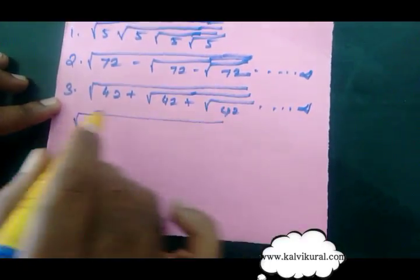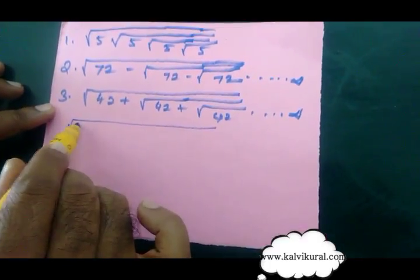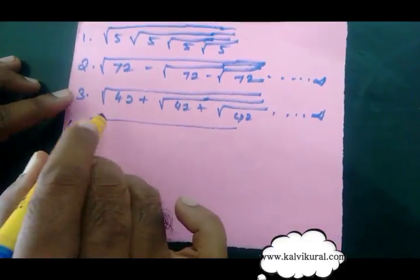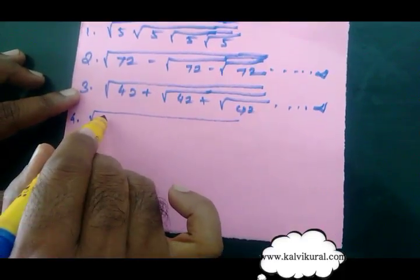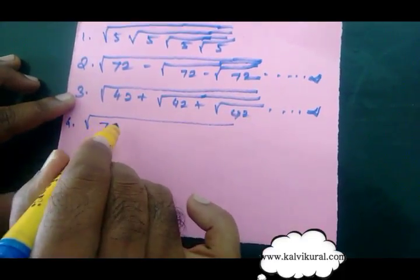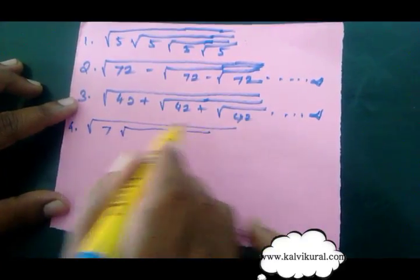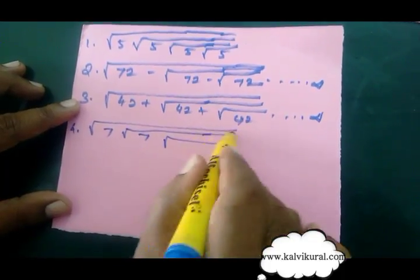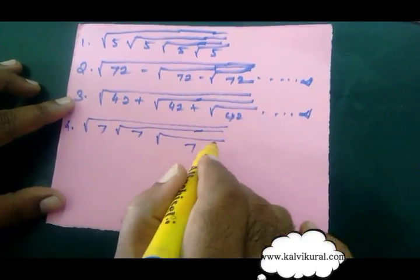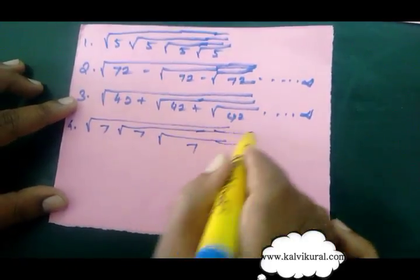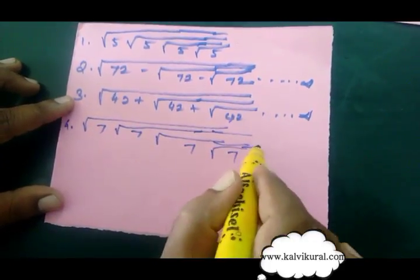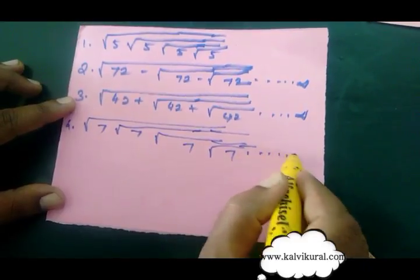Square root of... Question number 4. Square root of 7, square root of 7, square root of 7 — up to infinity.